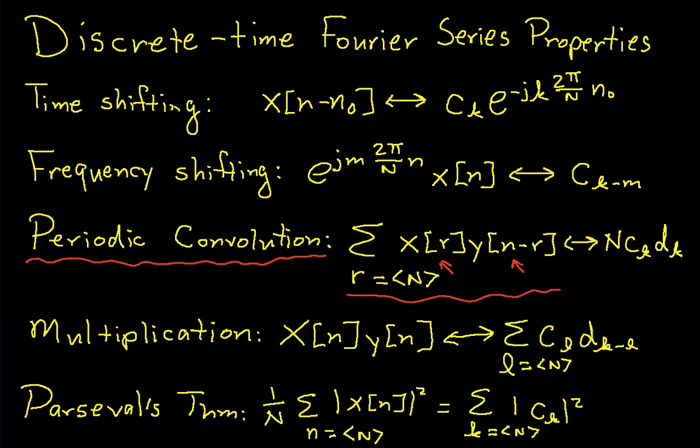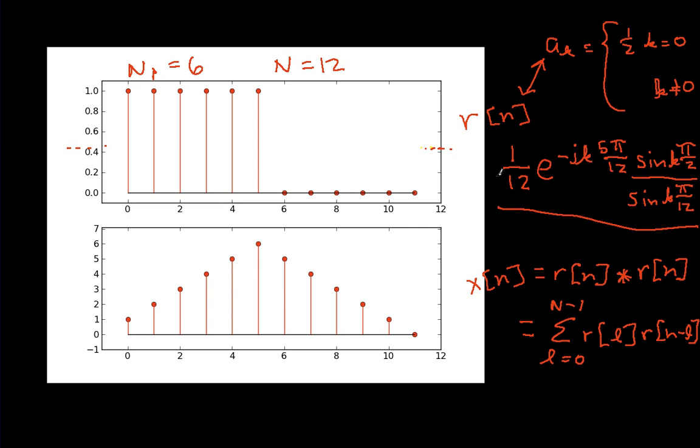So, to go back to the problem that we're trying to solve, we know the Fourier series coefficients. We have that the signal we want is the convolution of r with itself. So, that means that the Fourier series coefficients of x, which I'll call c sub k,